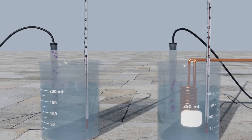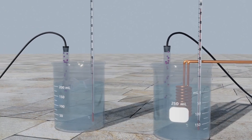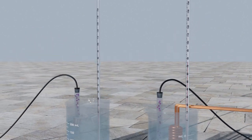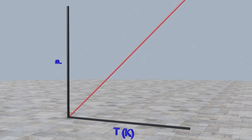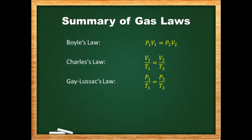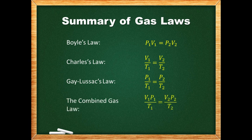Another French scientist, Joseph Gay-Lussac, discovered that if a gas is contained in a vessel that cannot expand, then as the Kelvin temperature increases, the pressure increases proportionally, leading to another gas law. In each of these three laws one of the variables — pressure, volume, or temperature — was held constant. In reality it is much more common that all three variables change. We can combine these gas laws into a single relationship known as the combined gas law.